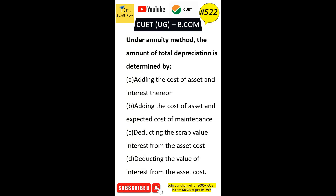Under the annuity method, the amount of total depreciation is determined by: Option A: adding the cost of asset and interest thereon. Option B: adding the cost of asset and expected cost of maintenance. Option C: deducting the scrap value interest for the asset cost. Option D: deducting the value of interest from the asset cost. The correct answer is Option A — adding the total cost of assets and interest thereon.